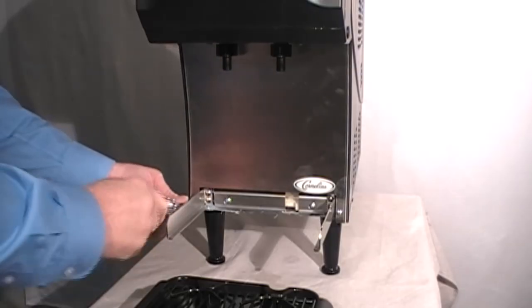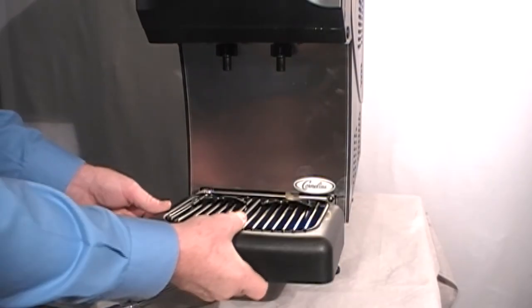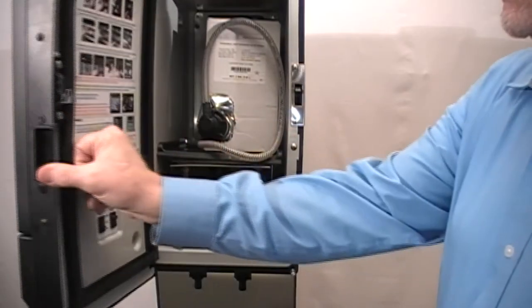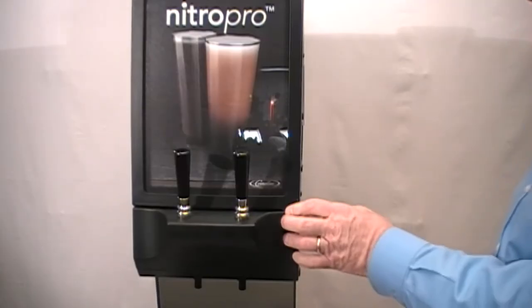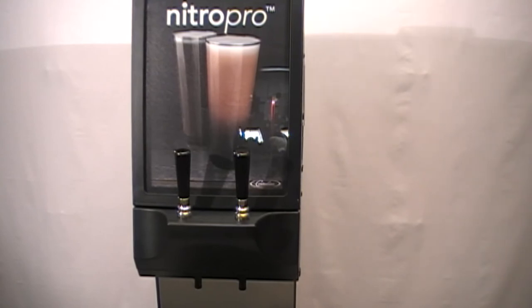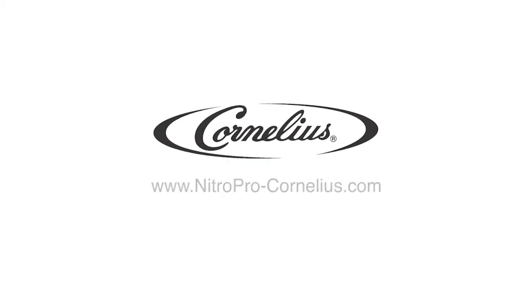Now replace the front stainless steel splash panel, drip tray, cup rest and install the pump deck cover inside the cabinet. The Nitro Pro Mini Dispenser is now ready for use.